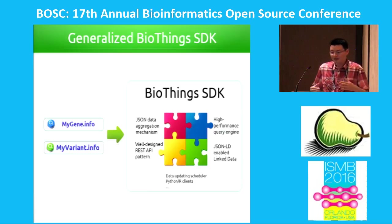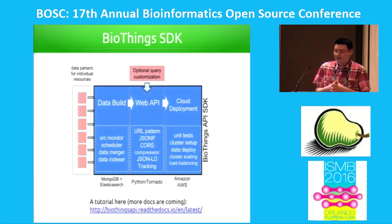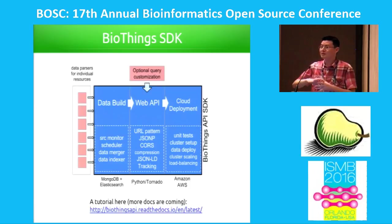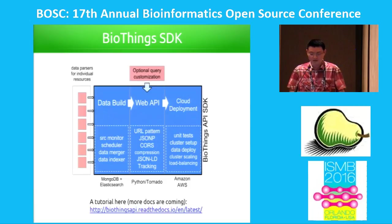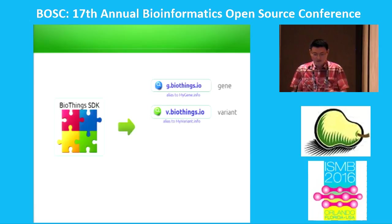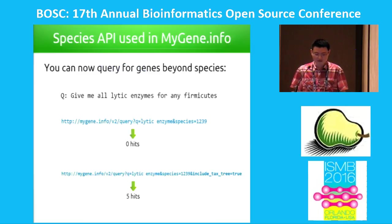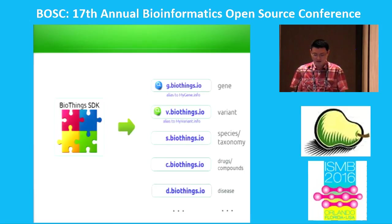Now that we have MyGene and MyVariant, we start to think about how to generalize this to other entities — for example, disease, drug chemicals. So we're developing a Biosynx SDK to abstract the data build, web API, and cloud deployment as common components across all different entities. This way we can quickly deploy another API, and users with a new Biosynx entity type can develop their own API using the same framework. So far we have the biosync.io domain registered, with gene and variants, and we've proven the concept by building a species API. We're in the process of building drug and chemical compound, and planning to build a disease API.